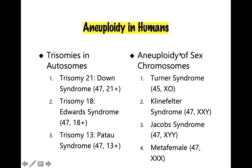In aneuploidy of sex chromosomes, Turner syndrome is an example with 45 chromosomes — one chromosome is lost. In Klinefelter syndrome, there is an extra chromosome: XXY. In Jacobs syndrome, there is also an extra chromosome: XYY. These individuals are sometimes called super males. Metafemales, or super females, have XXX.